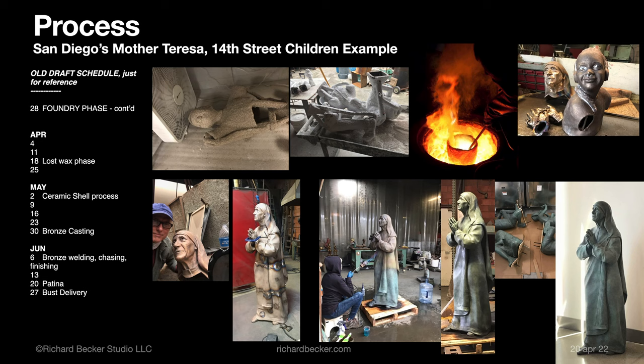They put all the shells upright, pack them in sand, and after they're heated up to the temperature of molten bronze, they pour the molten bronze inside each of these cups until they're full, then let it cool for a day or so. Then they crack out the bronze pieces. This piece here you can see still has ceramic stuck in her eyes and around her hair.